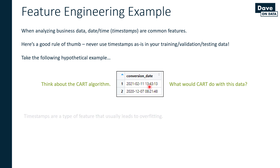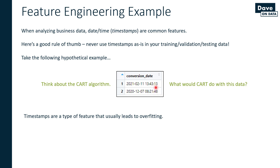Timestamps are a type of feature that usually leads to overfitting. I have actually seen models that used timestamps just like this without doing anything with them — they just fed them as-is into a tree-based machine learning model. The individual decision trees latched onto this and said, I can do a lot with this. In a binary classification scenario, the trees literally learn: if the date is February 11th, 2021 at 1:43:13 PM, then yes. If the date is December 7th, 2020 at approximately 8 o'clock in the morning, then no. So these timestamps as-is are ripe for overfitting, especially with tree-based algorithms — they will memorize this if they can.